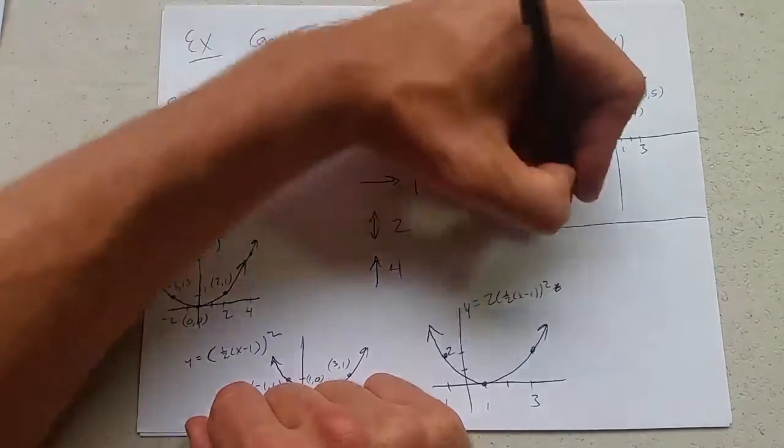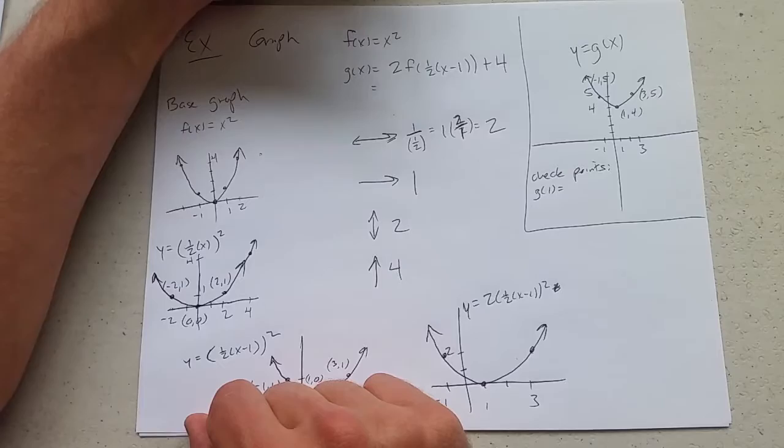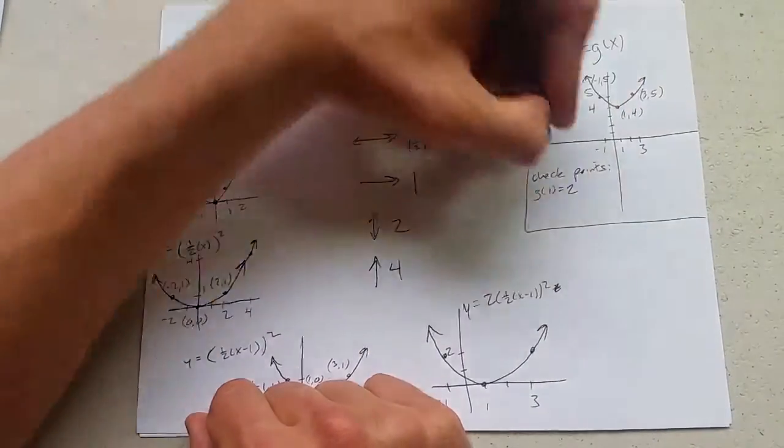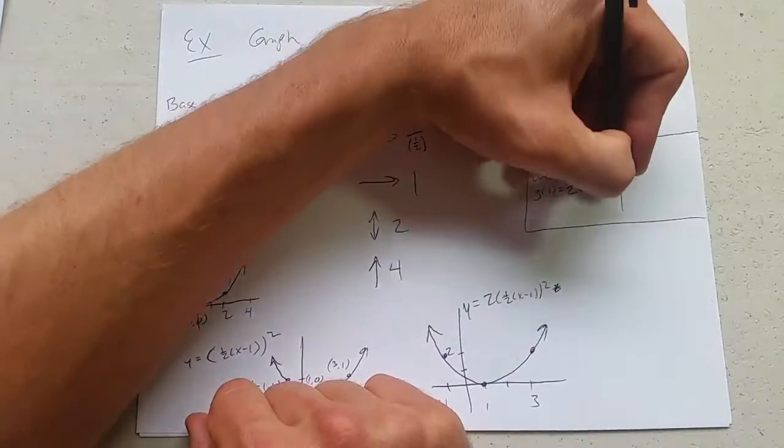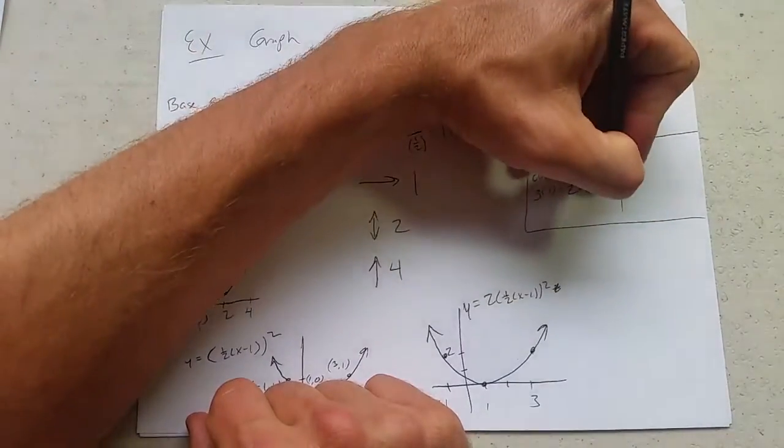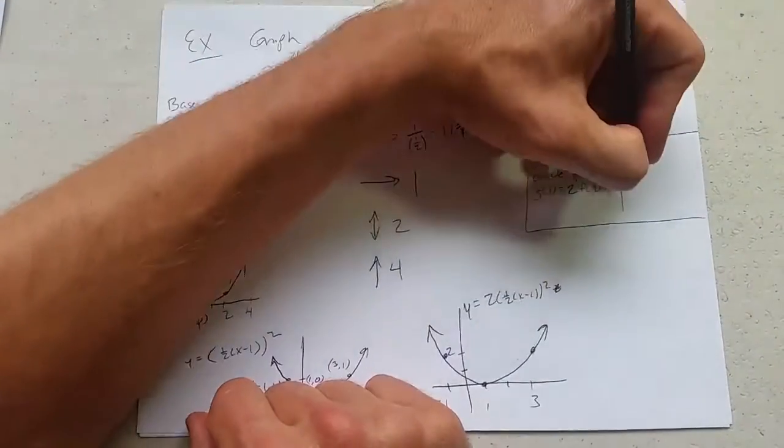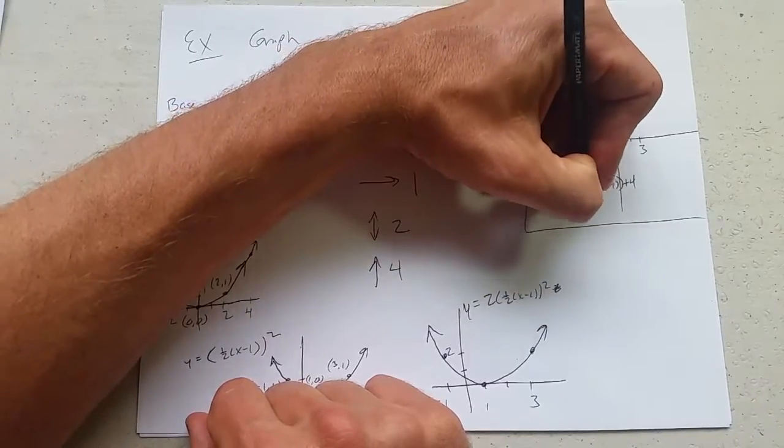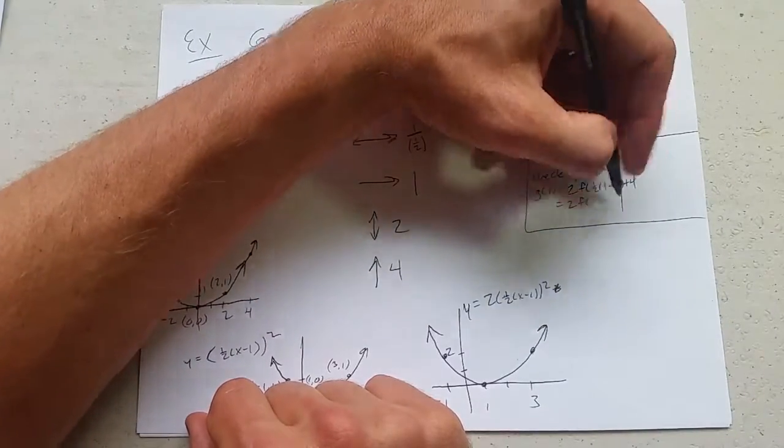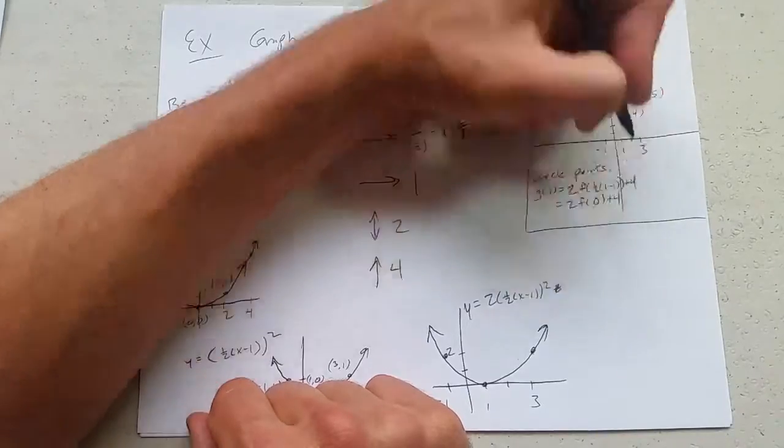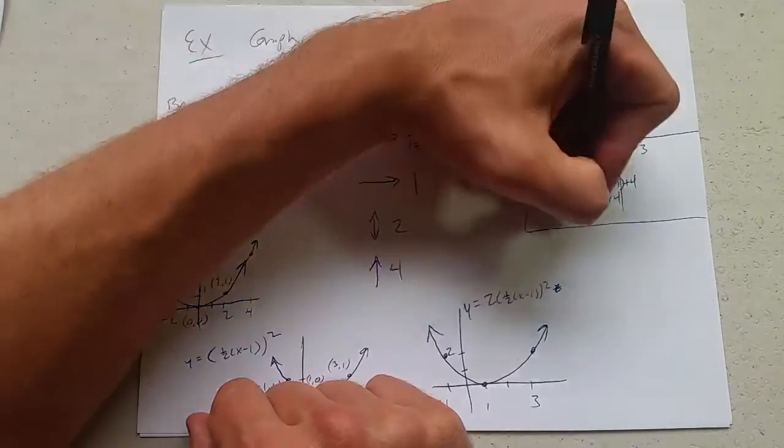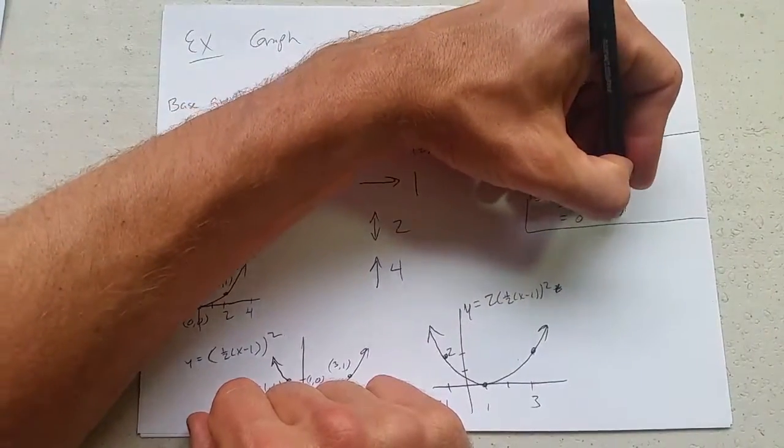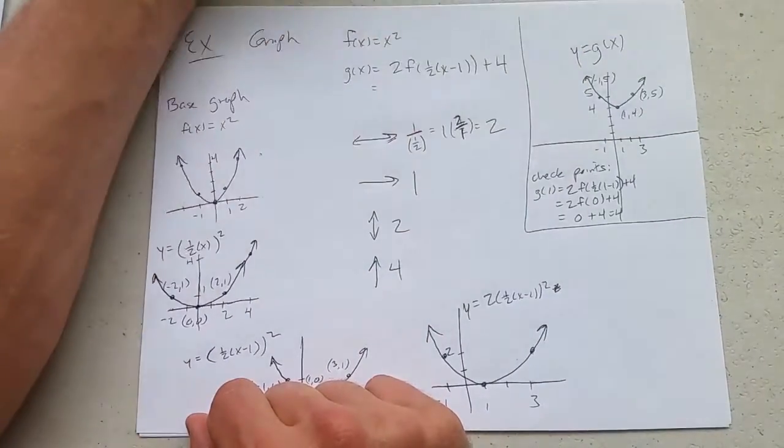So what is that? I do this very carefully. So it's 2f(1/2(x - 1)) + 4. X is one, so it's one minus one which is zero, times a half is zero. What is f(0)? We have to look up here, square it, we get zero plus four equals four. So there's our point four on the graph, and I can do very similar, plug in three and check that.